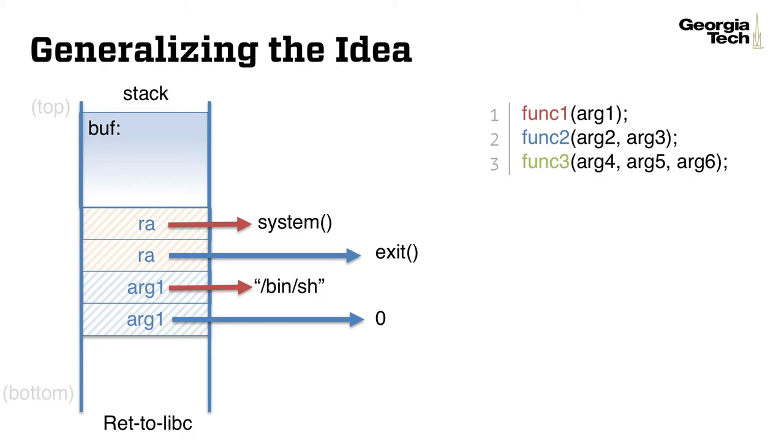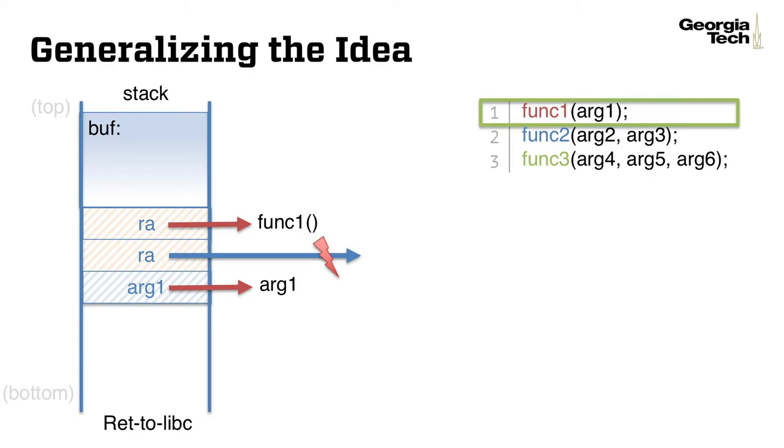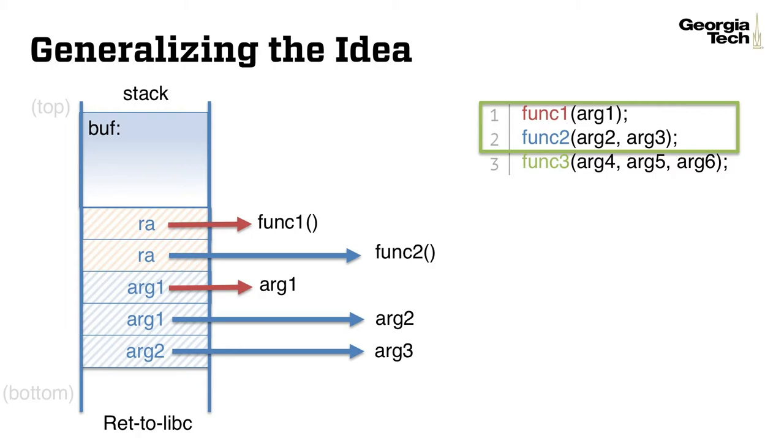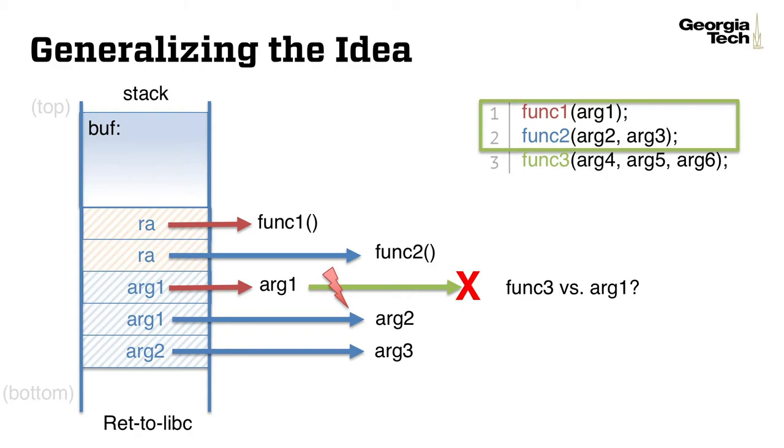Let's generalize this idea further. In this case, we'd like to invoke three functions: function 1 with one argument, function 2 with two arguments, and function 3 with three arguments accordingly. Once function 1 is invoked, we can redirect its control flow to the next function. In this case, we put two arguments, argument 2 and argument 3 for function 2 as before.